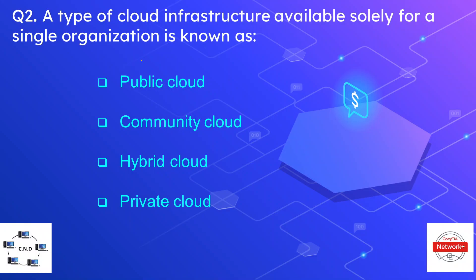Question number two: a type of cloud infrastructure available solely for a single organization is known as? The options are public cloud, community cloud, hybrid cloud, or private cloud. The correct option is private cloud. The private cloud is dedicated for a single organization, as opposed to the public cloud where anyone can access it. The private cloud is deployed and used by a single entity.